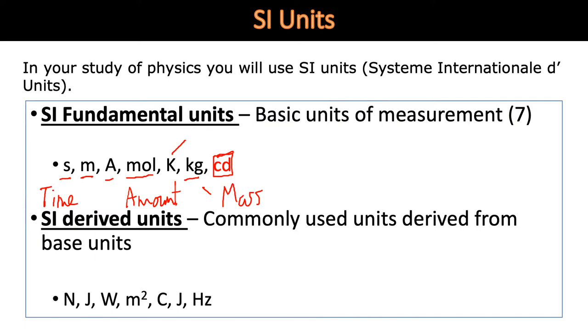Now, there are of course lots of other units other than those seven. We have the Newton, the joule, the watt, metres squared, Coulomb, joule again for some strange reason, and also hertz for frequency. So where do those units come from?